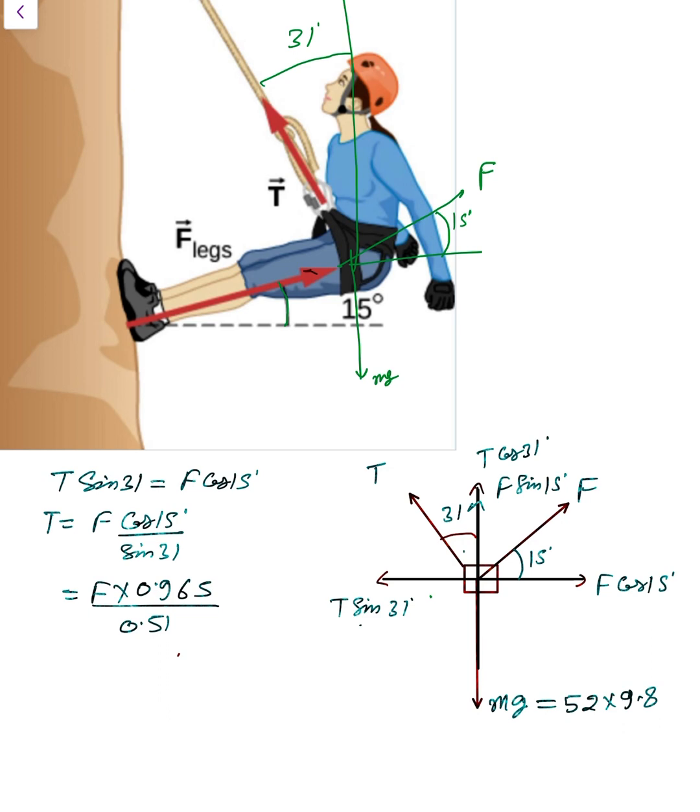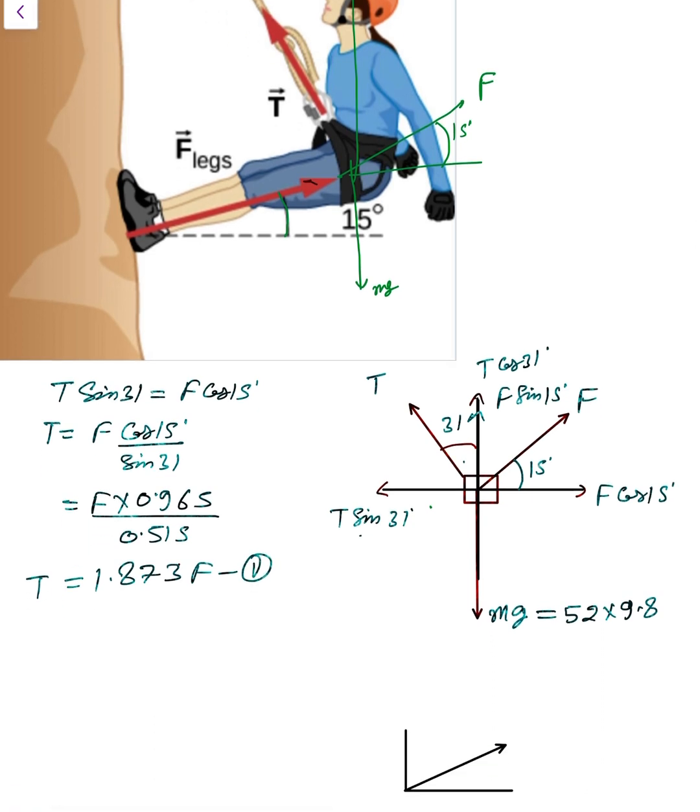Whole divided by sin 31, that is 0.515. Now 0.965 divided by 0.515 we get 1.873F. That is capital T, equation number one.